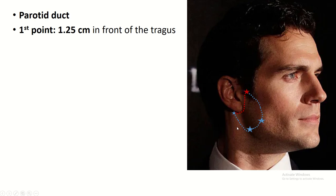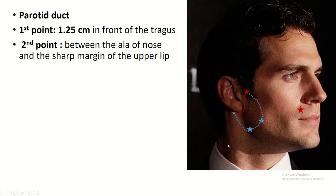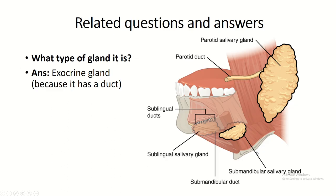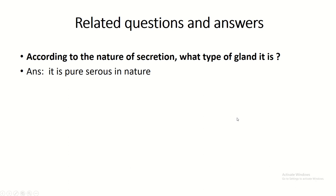Parotid duct: take the midpoint between the ala of the nose and the upper margin of the upper lip, then join this line — the middle third of this line represents the parotid duct. Related questions: it is an exocrine gland with a duct; it is pure serous in nature; it has two portions — parenchyma and stroma.